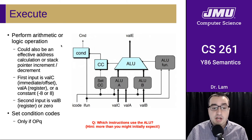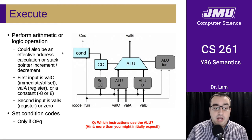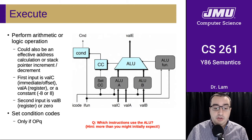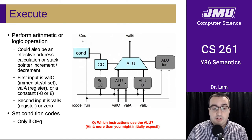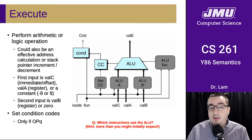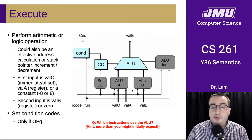The execute phase actually does any sort of arithmetic or logic operation that we need. This could also be an effective address calculation or a stack pointer operation — there's quite a variety of things we use the ALU for, not just arithmetic and logic instructions specifically. There are two inputs to the ALU: the first is either ValC if it's an immediate or offset, ValA if it's a register value, or a constant for instructions that manipulate the stack. The second input is either ValB or zero.